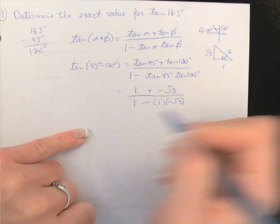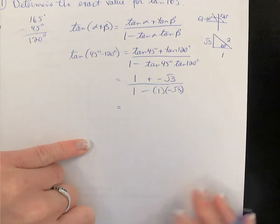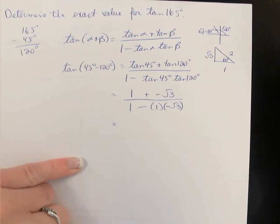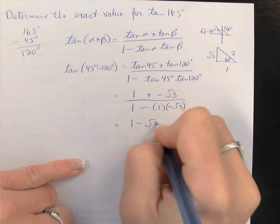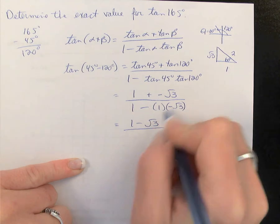So let's clean this up in terms of the signs. It's just going to be 1 minus √3. Negative 1 times negative √3, we're going to have 1 plus √3. We have done this - this is an exact value,